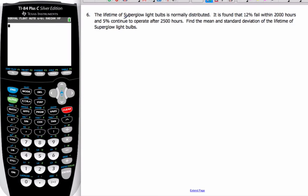Let's take a look at this problem. We have a lifetime of Superglow lightbulbs, and it's normally distributed. It's found that 12% fail within 2000 hours, and 5% continue to operate after 2500 hours.